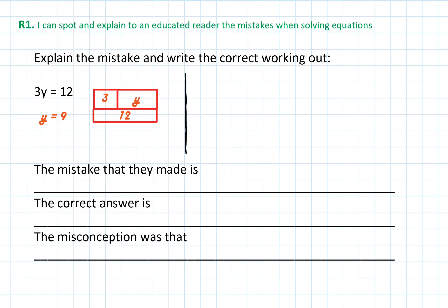Someone did 3y equals 12. They drew a bar model, and then they solved it as y equals 9. The first thing we can do when we are solving problems in R1, is instead of focusing on finding the mistake, we can just solve the problem ourselves.